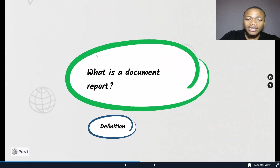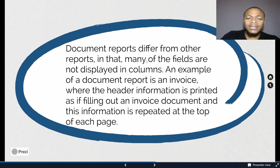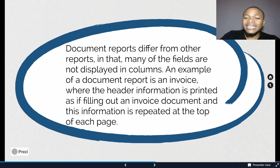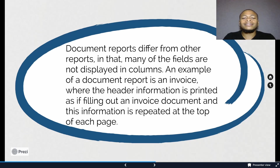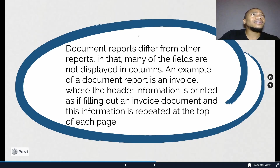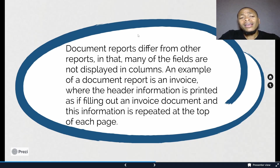Document reports differ from other reports in that many of the fields are not displayed in columns. An example of a document report is an invoice, where the header information is printed as if filling out an invoice document and is repeated at the top of each page. The lines will appear as in other list reports. So a document report emulates the way documents like sales invoices appear.